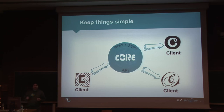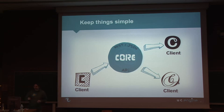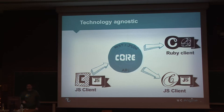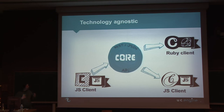UCEngine is built to be developer-friendly, so we really try to keep things simple. We have built a REST API on top of an Erlang core, with JSON as the primary data format. And as it's HTTP-based, it's simple and you have tons of libraries to play with. You're not tied to a specific language because UCEngine has been designed to be technologically agnostic and interoperable, so you can use the language you want.